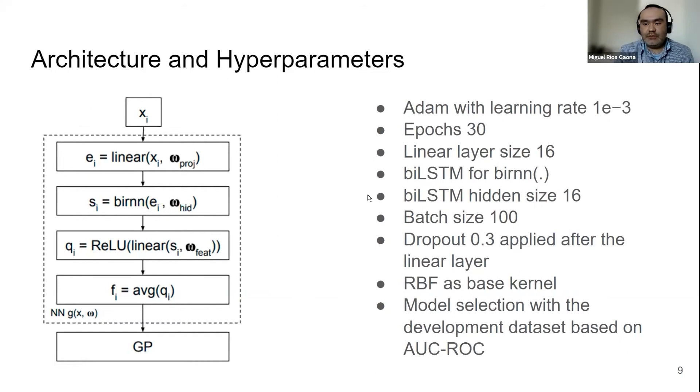We use these hyperparameters: Adam with learning rate 1e-3, 30 epochs, linear layer size of 16. We use bi-LSTM for the bi-RNN, and the bi-LSTM has a hidden size of 16, batch size of 100, dropout of 0.3 applied after each linear layer. For the kernel in the GP, we are going to use an RBF, a common kernel for Gaussian processes, and we are going to perform model selection with a development dataset based on AUC-ROC.